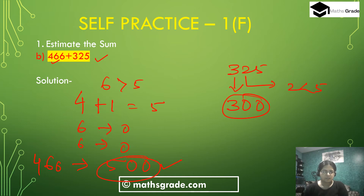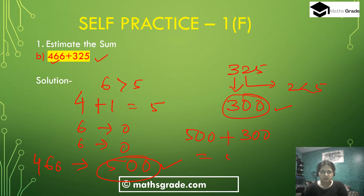Now add the rounded values: 466 rounded to the nearest 100 is 500, and 325 rounded to the nearest 100 is 300. Now 500 plus 300 is 800, and 800 is the answer. So estimating the sum 466 plus 325 is 800.